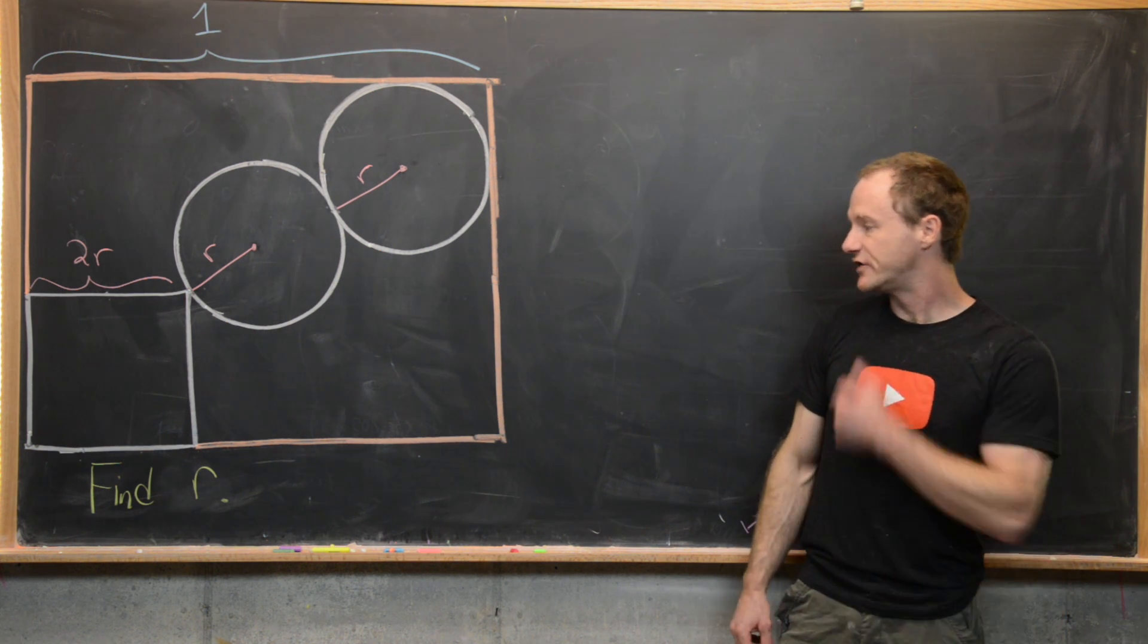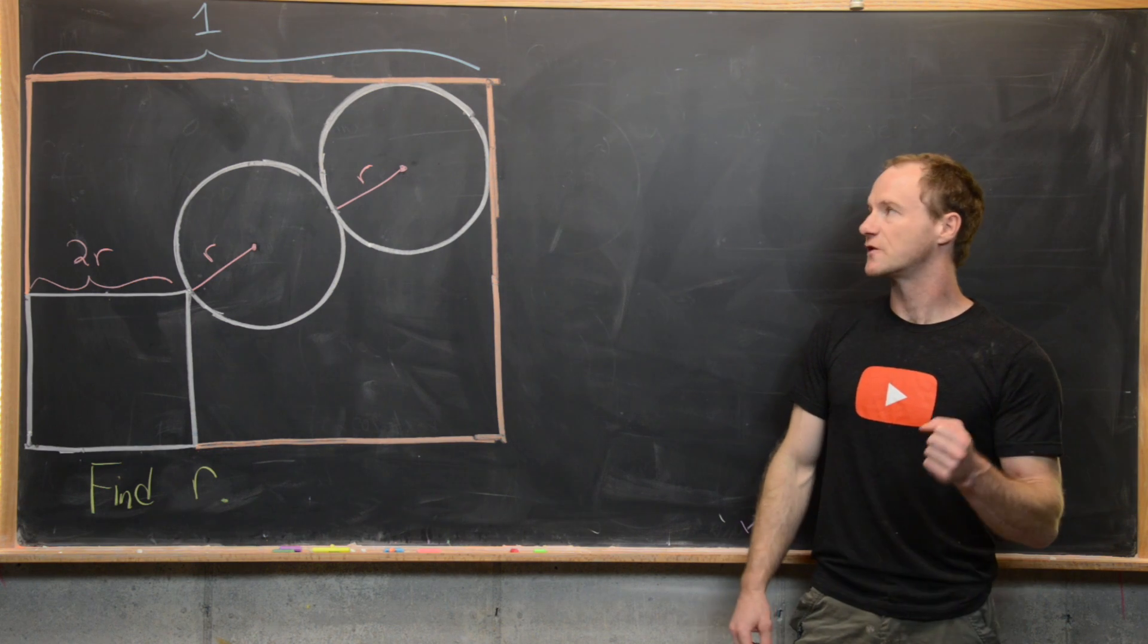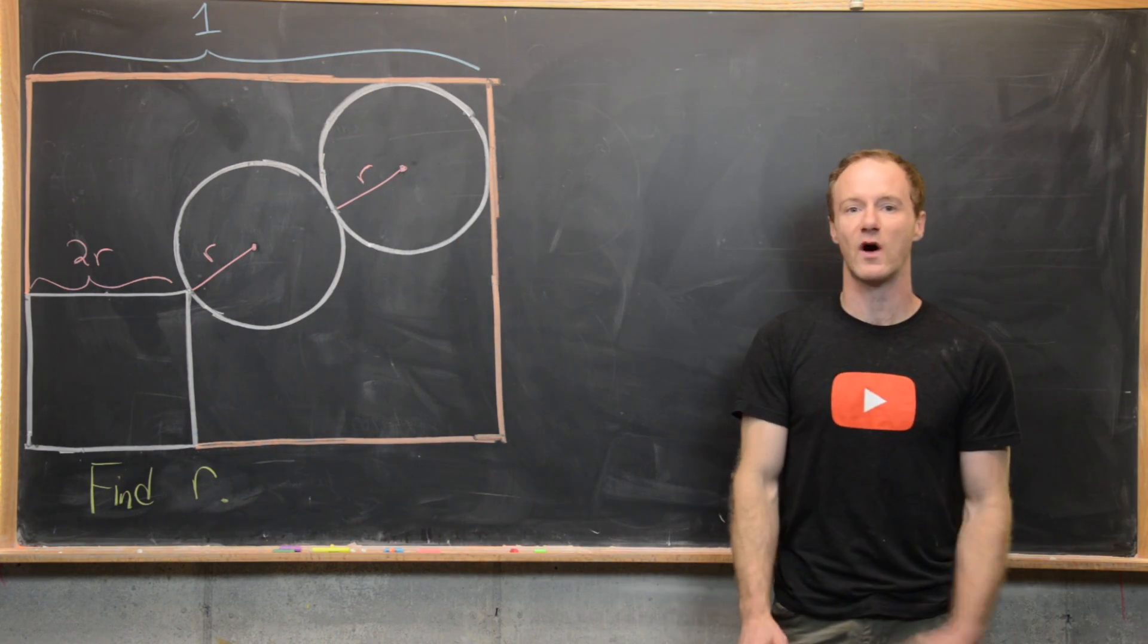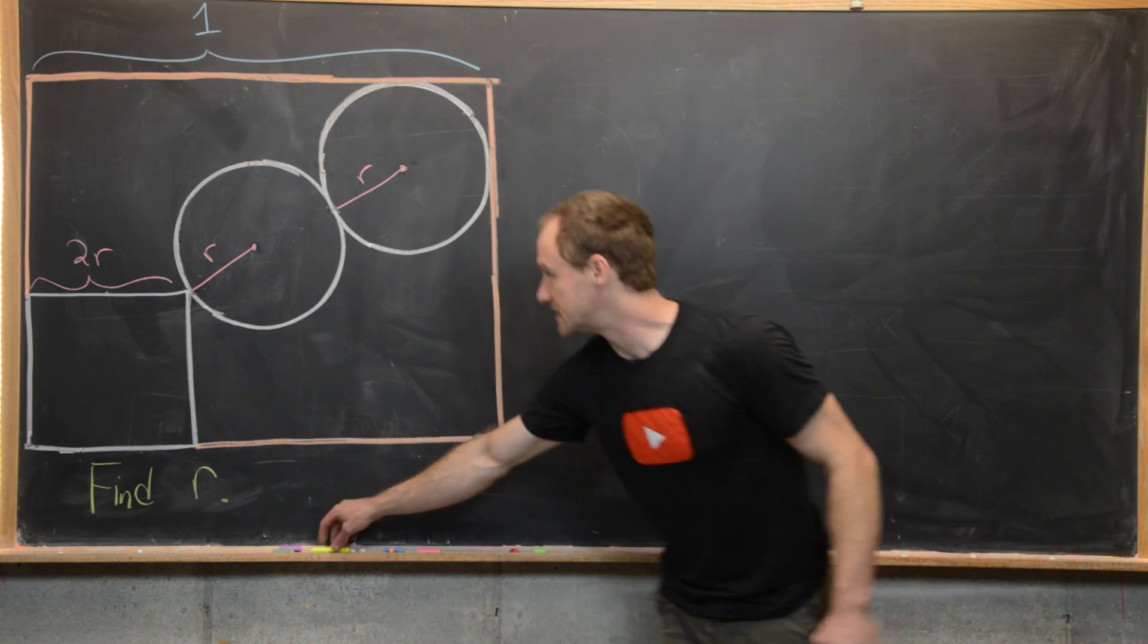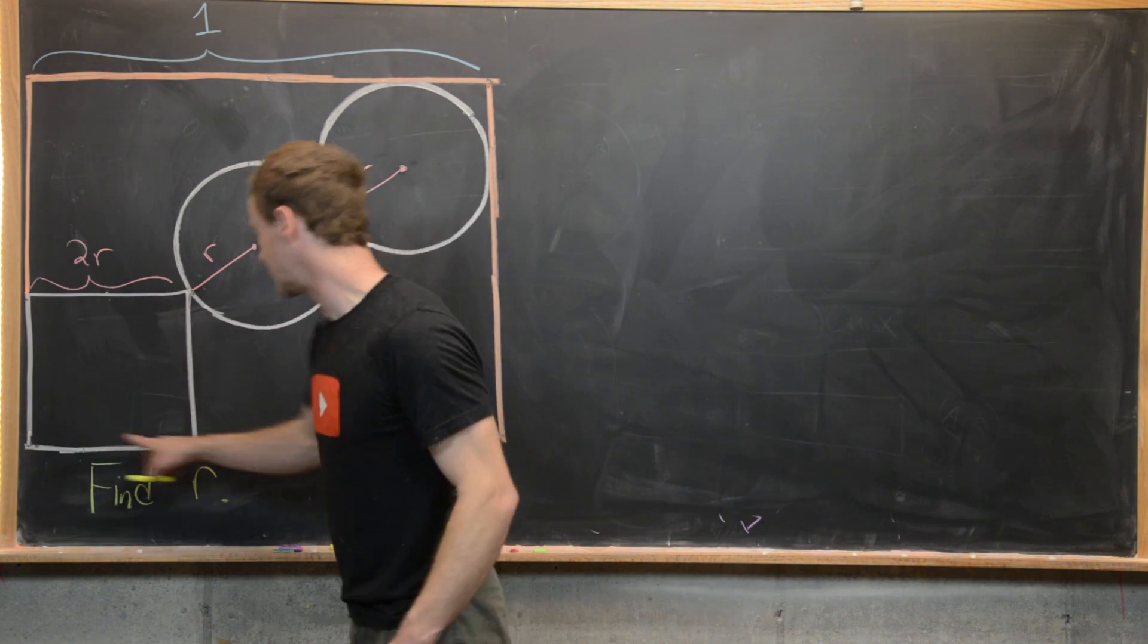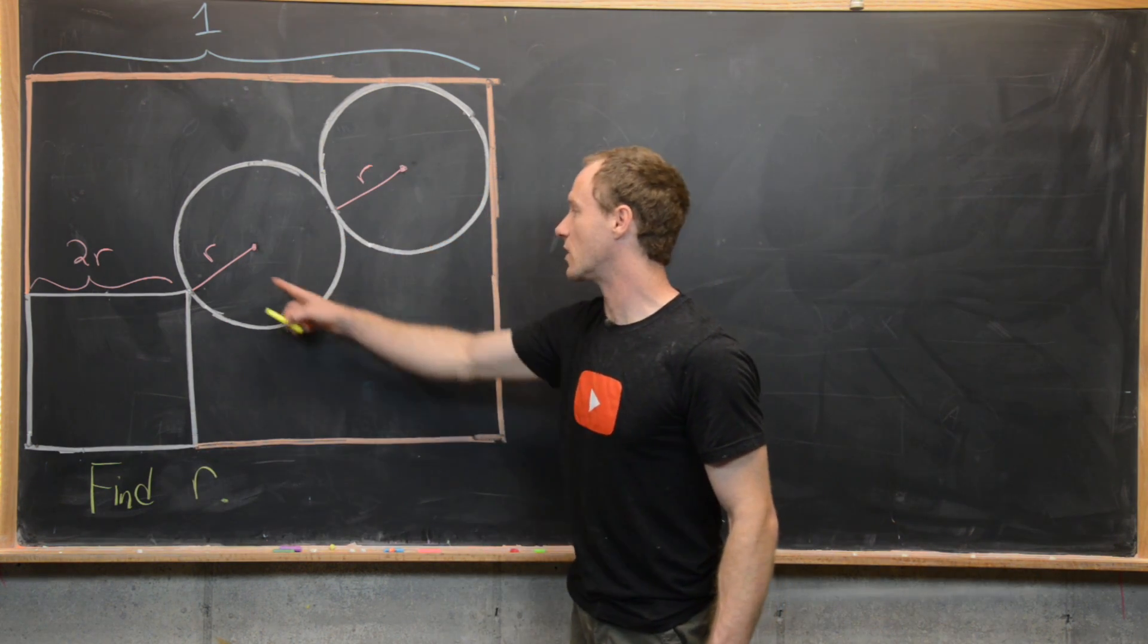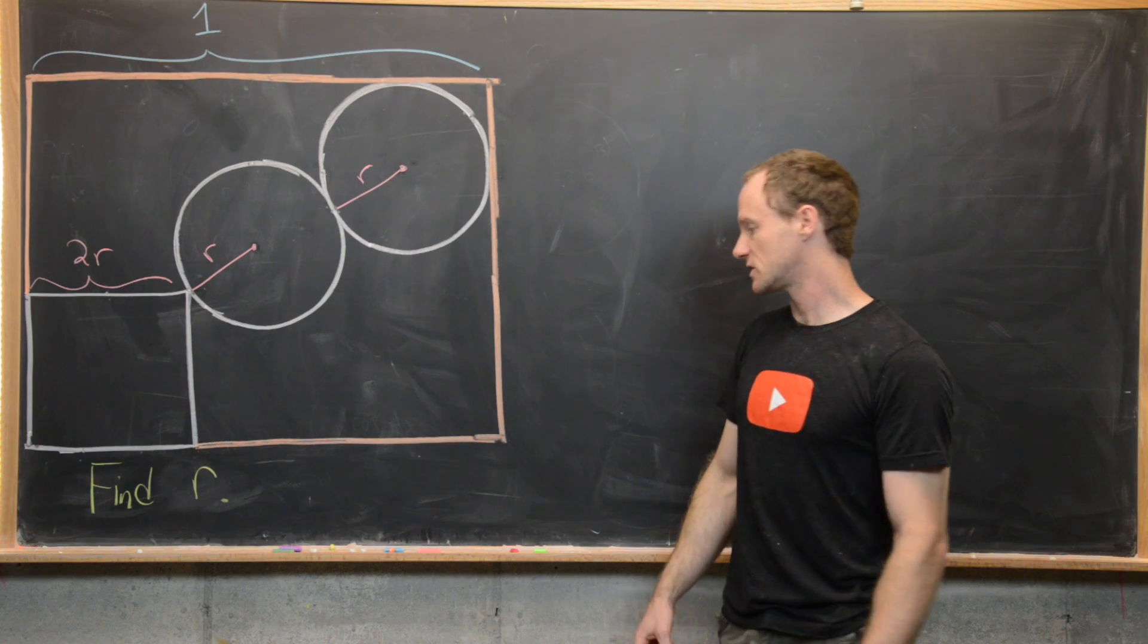Okay, so what I want to do is measure the side length two different ways. So the first way I'm going to measure the side length is just by noticing that it's length 1, and the other way is by measuring across this small square and then across a triangle that I have built from these two circles. So let's go ahead and do that.